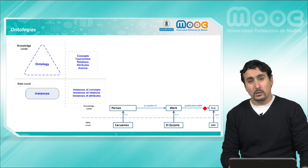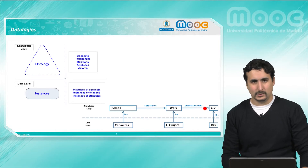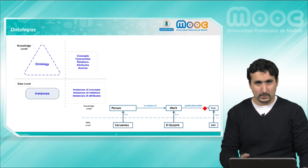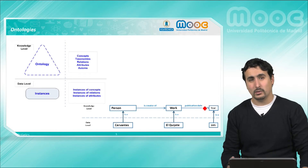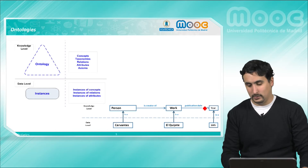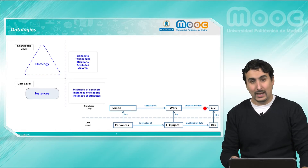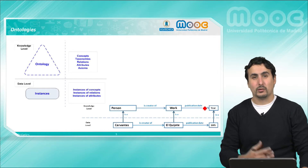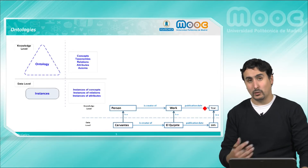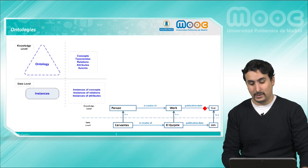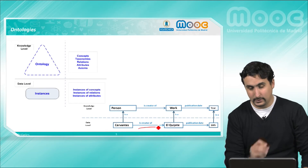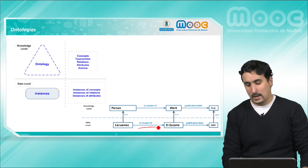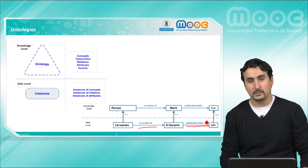On the data level we will have instances of these elements. We will say that for example Cervantes is an instance of a person, and that El Quijote is a work with a publication year. We can then relate these individuals by means of instances of the properties of our model. So we will say that Cervantes is the creator of El Quijote and that El Quijote was published in 1605.